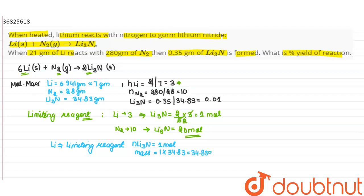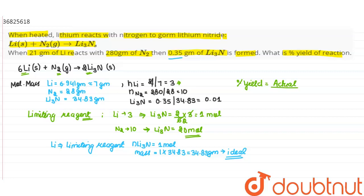The theoretical yield is 34.83g. The actual product formed is 0.35g. Percentage yield = (actual product / theoretical product) × 100 = (0.35 / 34.83) × 100 = 1.004%.